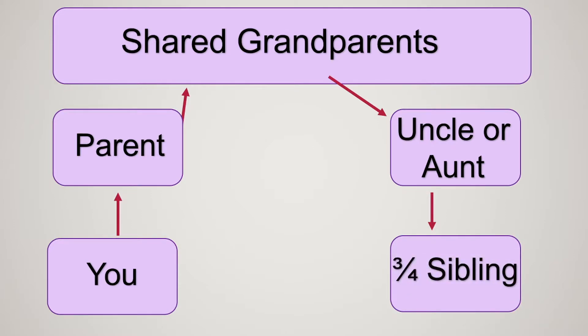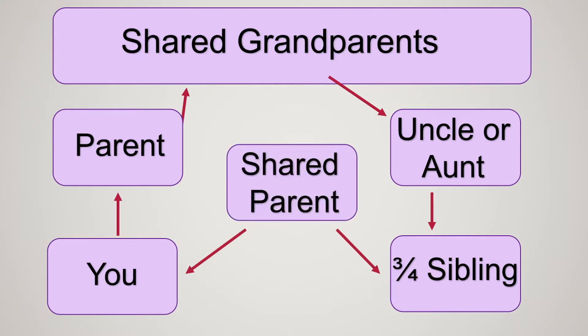What makes them a three-quarter sibling? A shared parent. For example, if your parent is a father and your uncle or aunt is your uncle, then your shared parent would be your mother. And vice versa, if your parent was your mother and your uncle or aunt was your aunt, your shared parent would be a father.